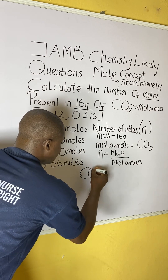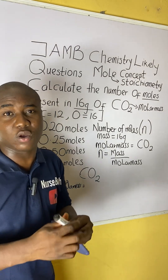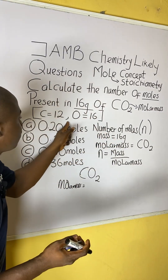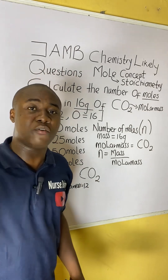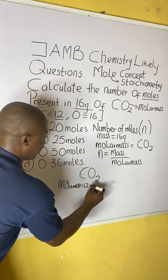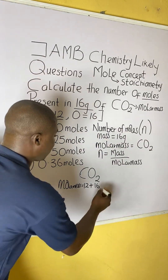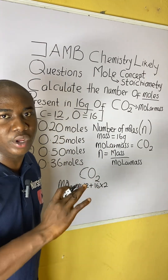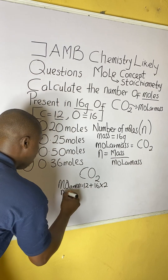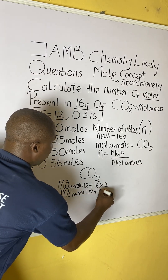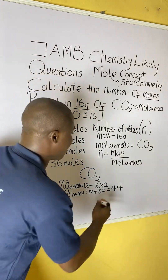The compound is CO₂. Let's solve for its molar mass. You need to know the atomic masses of each element in the compound. The first element is carbon, with atomic mass 12. Oxygen has atomic mass 16, and since we have 2 oxygen atoms, that gives 16 times 2 equals 32. The molar mass of CO₂ is therefore 12 plus 32 equals 44 grams per mole.